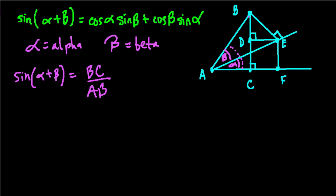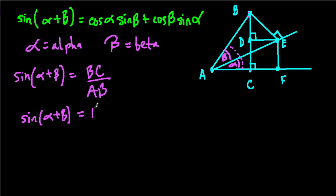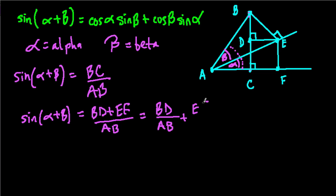The next observation is: could we write BC in a different way? BC is from this point to this point. We could write BC as BD plus EF — that's the same thing, just saying this piece and this piece equal BC. So the sine of alpha plus beta equals BD plus EF over AB, which we can rewrite as BD over AB plus EF over AB.